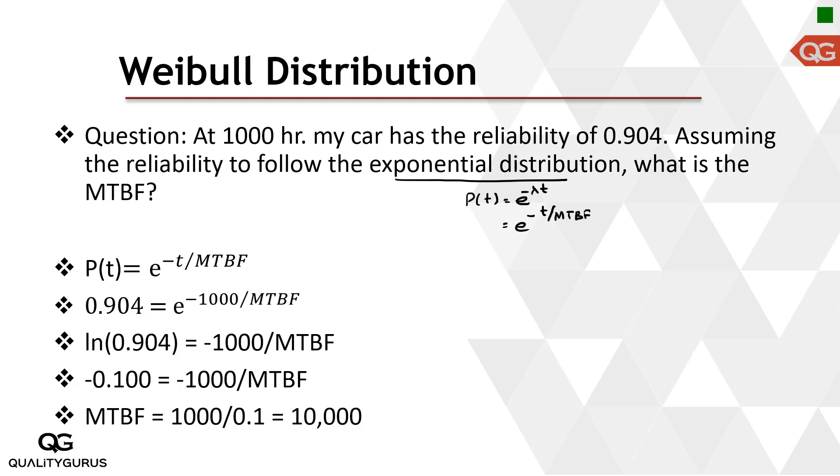Now how do I find out mean time between failure when I know the probability? Let's put all the values here. So this is the formula and I put the probability as 0.904 and e to the power minus 1000, which is the time t, divided by MTBF, which is something I need to find out.